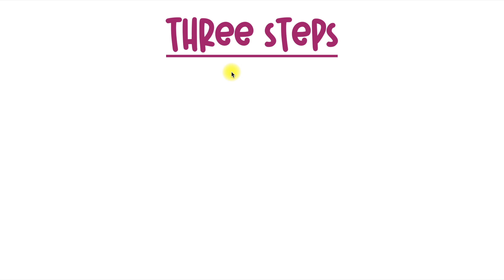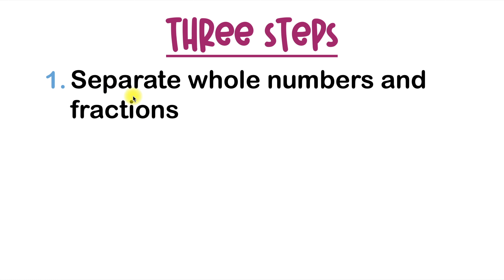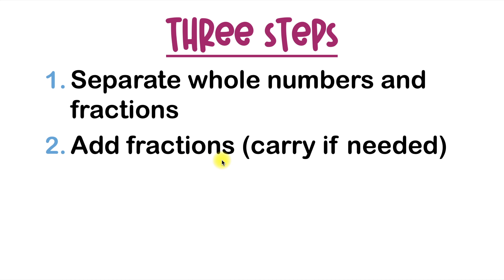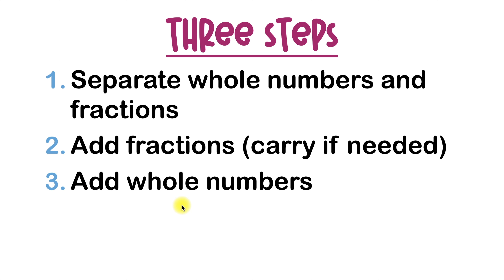Let's go over the three steps that you'll need to add mixed numbers. Step number one, you'll need to separate the whole numbers from the fractions. Remember that mixed numbers have two parts — on the left side there's a big number, that's the whole number, and on the right side there is a fraction. We need to separate those two things. Step number two, we'll have to add the fractions together and carry if needed. And step number three is to add the whole numbers together. You might want to have this copied down somewhere.